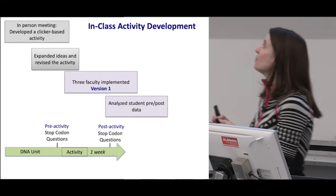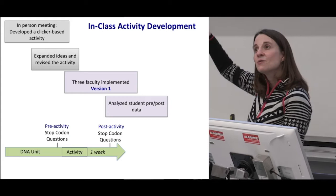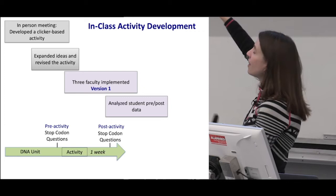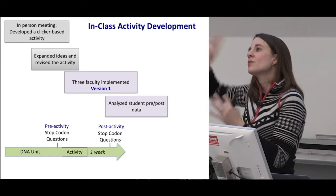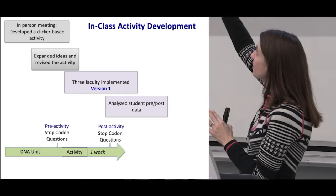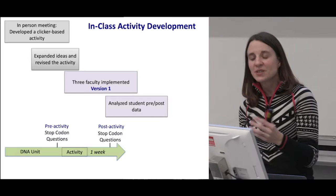Each of these faculty taught the DNA unit for their class — whatever that meant to them, we didn't control that. They then asked the stop codon questions about DNA replication, transcription, and translation. They did the activity in class for a day. A week went by and they asked the stop codon questions again. The students did not get feedback on their performance until the whole data collection was over. We'll label these two time points as pre-activity and post-activity, and then we analyzed the student pre-post data and some additional exam questions.